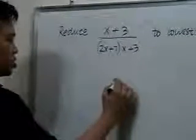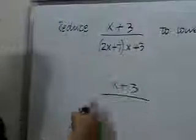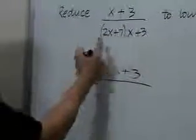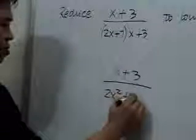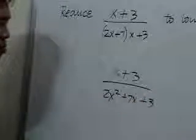So what we can do is distribute x here and then see what we can do. So x times 2x is 2x squared, and x times 7 is positive 7x. And of course, we have the term positive 3.